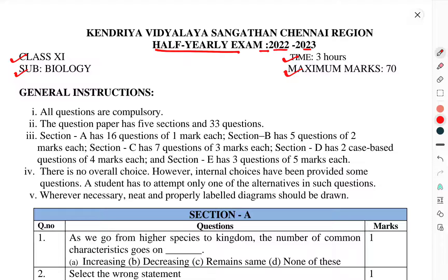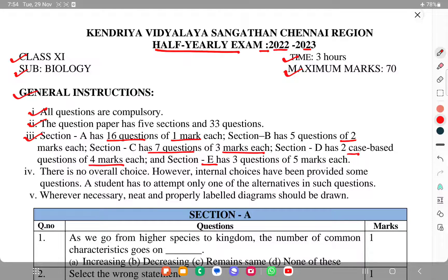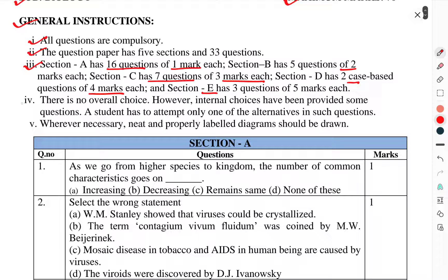First of all, we will talk about questions in this paper. We won't talk about the answers, so let's start. General instructions: All questions are compulsory. The question paper has 5 sections and 33 questions. Section A has 16 questions of 1 mark each, Section B has 5 questions of 2 marks each, Section C has 7 questions of 3 marks each, Section D has 2 case-based questions of 4 marks each, Section E has 3 questions of 5 marks each. There is no overall choice, however internal choices have been provided in some questions. A student has to attempt only one alternative in such questions. Whenever necessary, neat and properly labeled diagrams will be drawn.